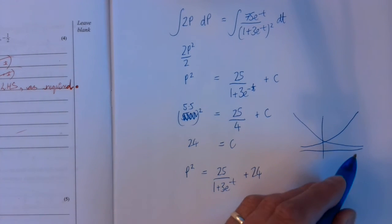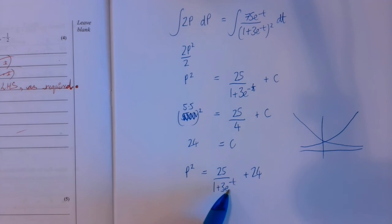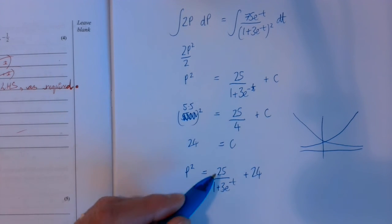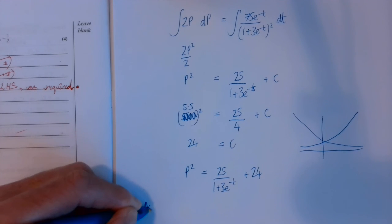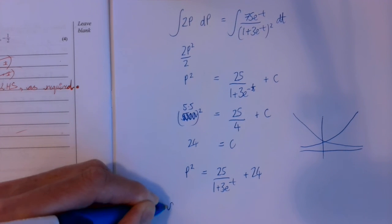this will get really small. It never reaches 0, but it almost gets 0, and 3 times 0-ish will be 0-ish. So actually, as t gets very big, that just becomes 25 divided by 1. So as t tends to infinity,